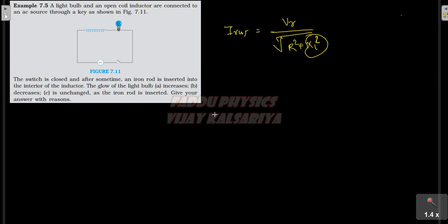So what is XL? XL will be omega into L. And L is the self inductance mu naught n square A divided by l.